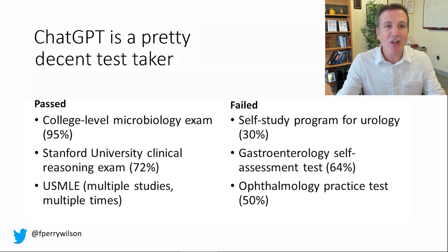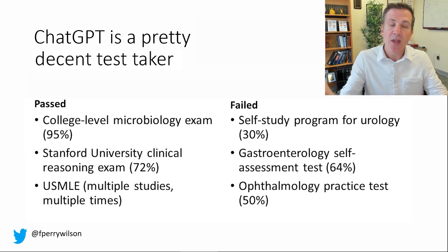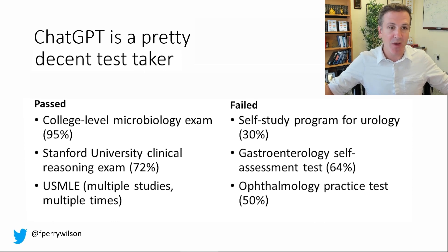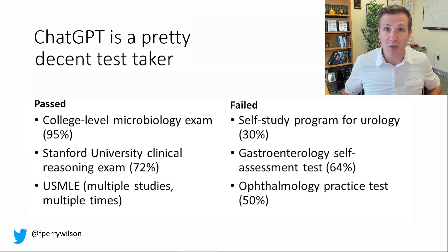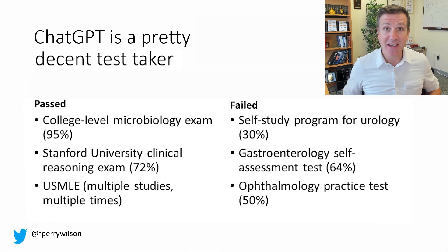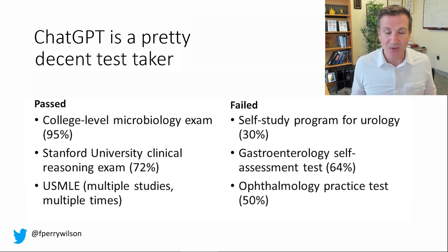How do we use generative AI — something that fundamentally expands on the data we have available, as opposed to reducing it? Well, let's start talking about ChatGPT, the most famous generative AI. Those of you who haven't played with it, it's fun to play with. And it is a pretty decent test taker. Some of the studies out there have shown that if you just feed questions from a college-level microbiology exam and let ChatGPT pick the answer, you're going to score about 95%, which is obviously pretty good. And multiple studies have actually shown that ChatGPT can pass the United States medical licensing exam, Step 1 — something many doctors have taken and suffered through. Highly impressive.